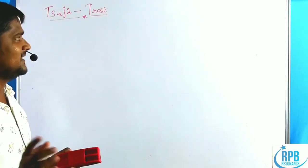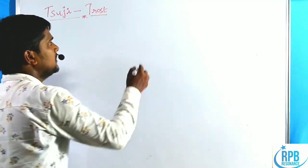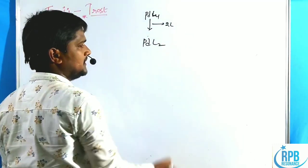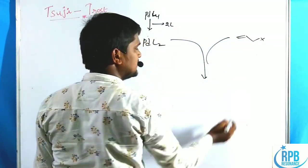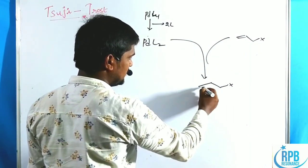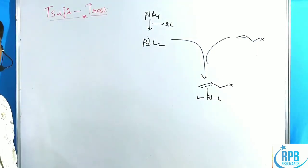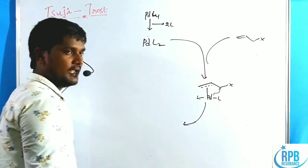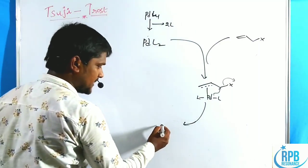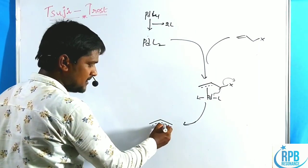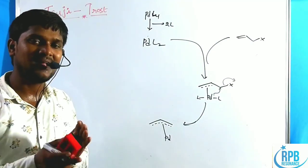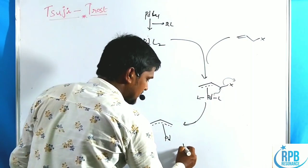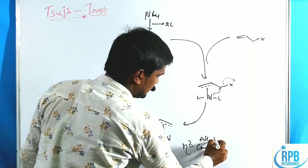Let us discuss the Tolman catalytic cycle (mechanical pathway) of the Suji-Trost reaction. Starting with Pd(L)4, ligand dissociation gives Pd(L)2. The allylic substrate then associates — its π-bonded electrons coordinate with the palladium catalyst. The palladium electrons attack the allylic position and X⁻ is eliminated, forming an η3-allyl complex where three carbons are shared with the palladium metal atom. (η1 = one carbon; η2 = two carbons; η3 = three carbons.)